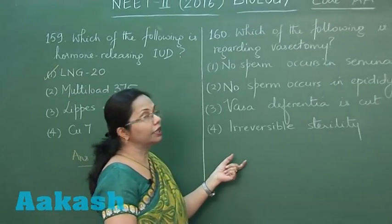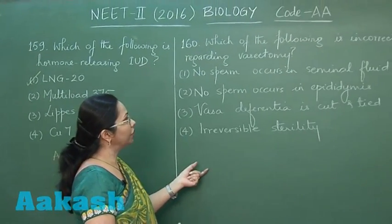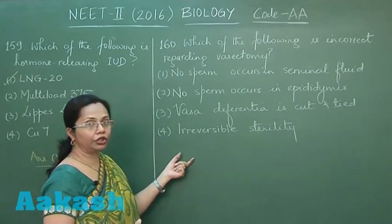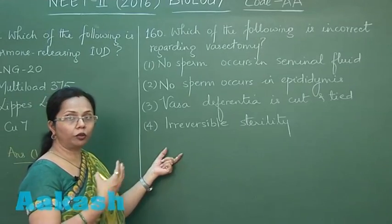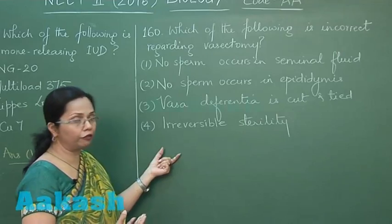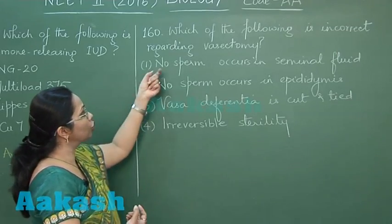Which of the following is incorrect regarding vasectomy? Now in vasectomy, the vas deferens are cut and tied, so as a result the sperms will not be able to reach into the seminal fluid. So in this case, no sperm occurs in seminal fluid - that's right.